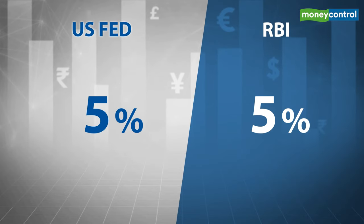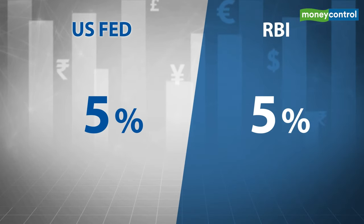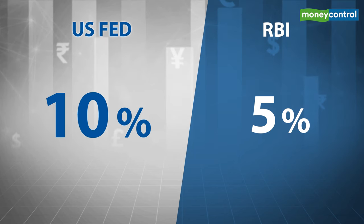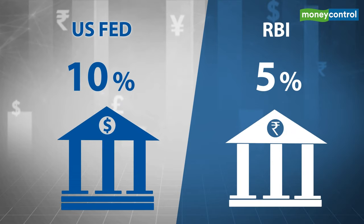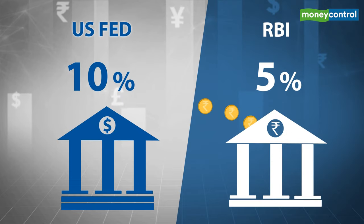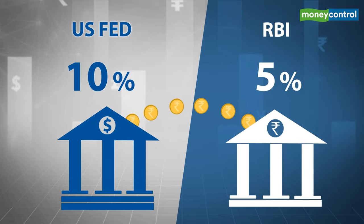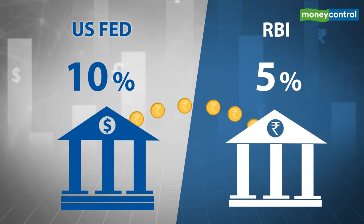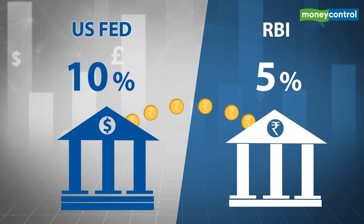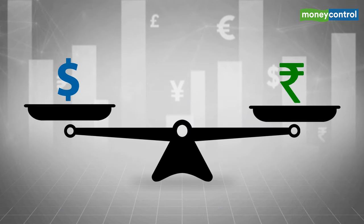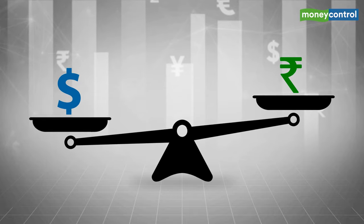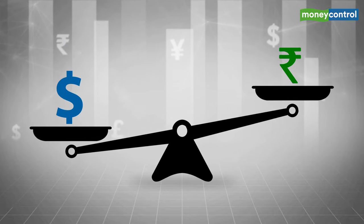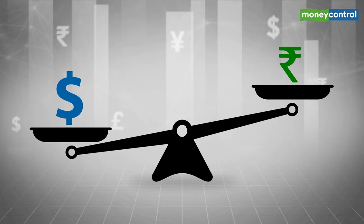For example, suppose interest rates in both the US and India are 5%, but then the US Fed hikes interest rates to 10%. Foreign investors will withdraw rupees from Indian banks and convert them into dollars to deposit in US banks, since they're getting more returns. So demand for the dollar rises, demand for the rupee dips. And as discussed, when demand for a currency increases, its value rises.